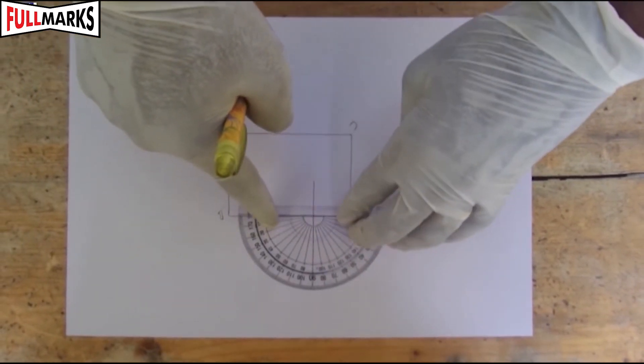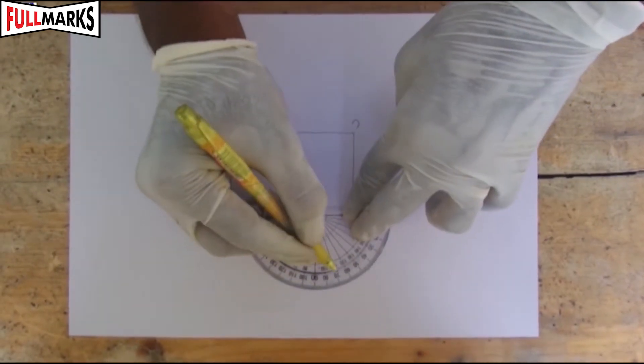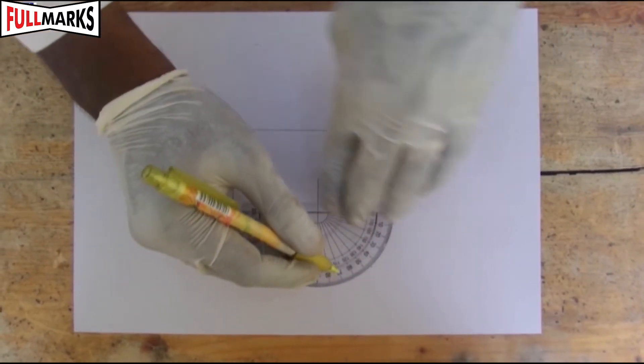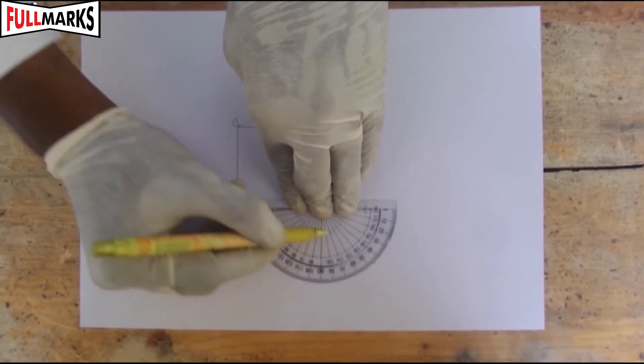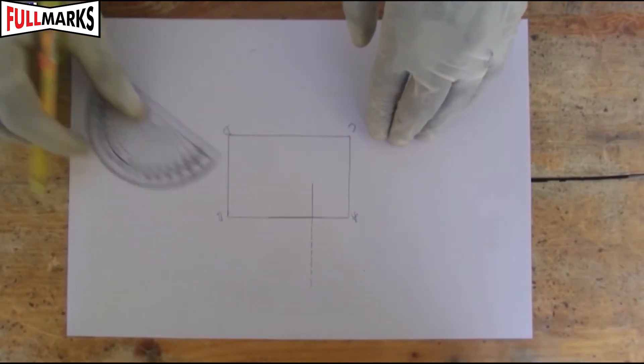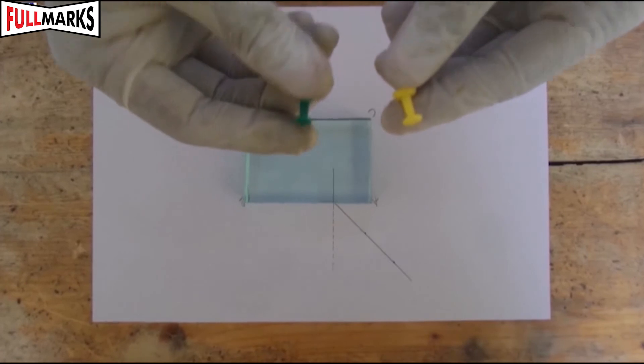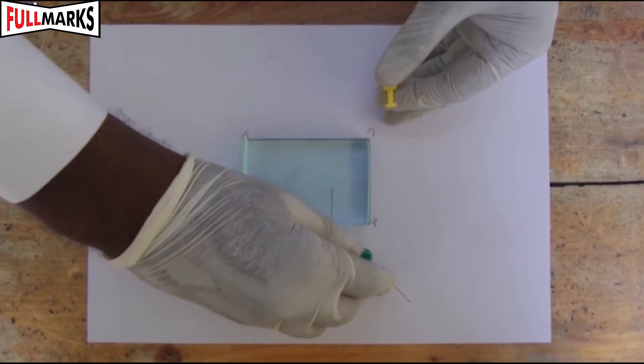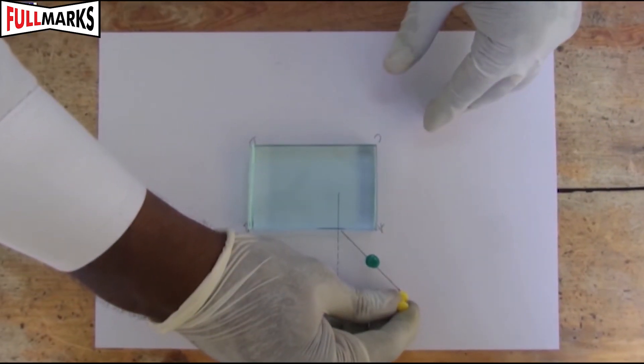With the help of a protractor, draw one angle of 45 degrees. Fix two pins P and Q on the ray of this angle. The distance between the pins should be more than 4 to 5 centimeters.